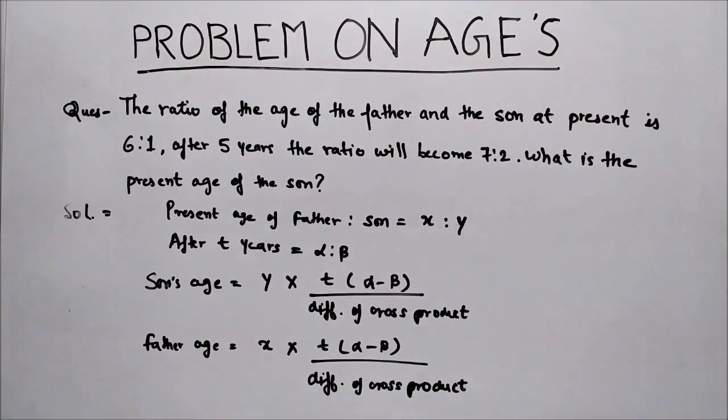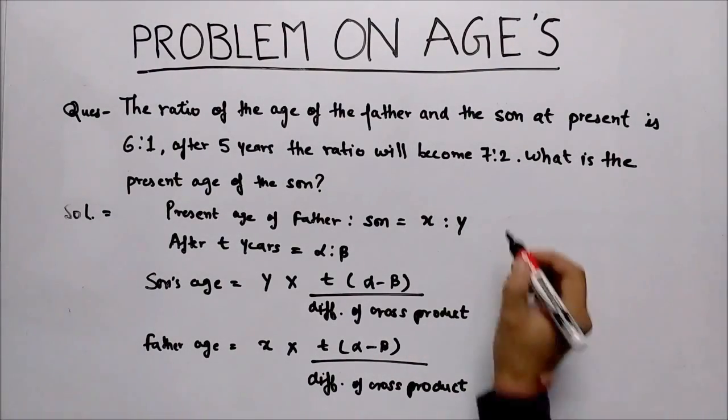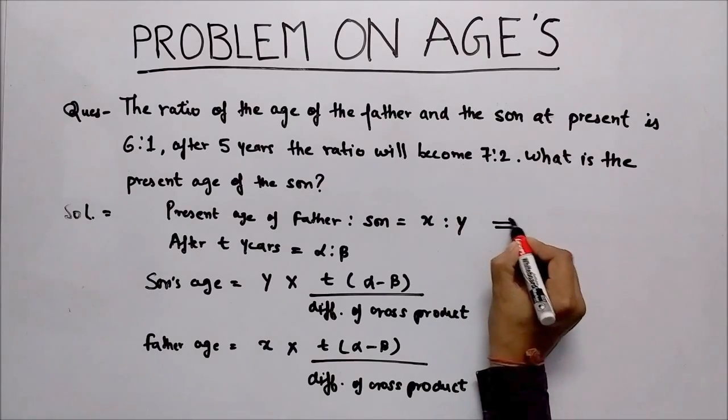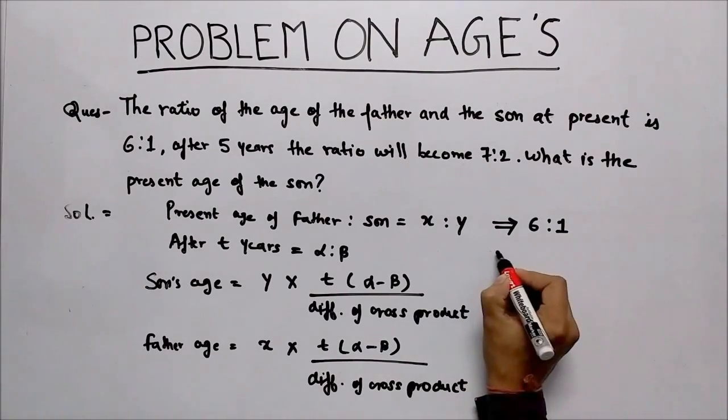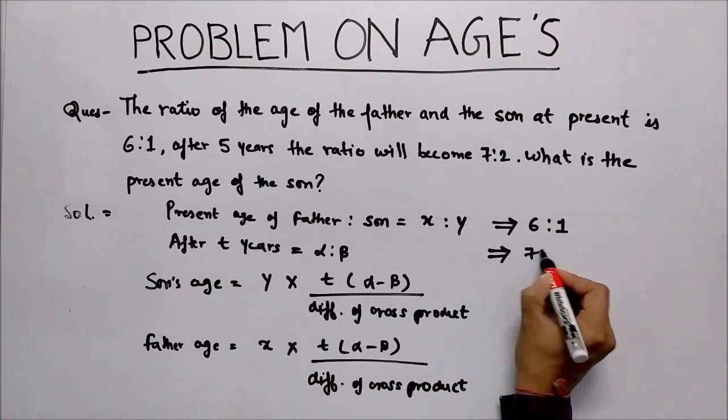Put the values. x:y here is 6:1, and alpha:beta here is 7:2. Now calculate son's age.